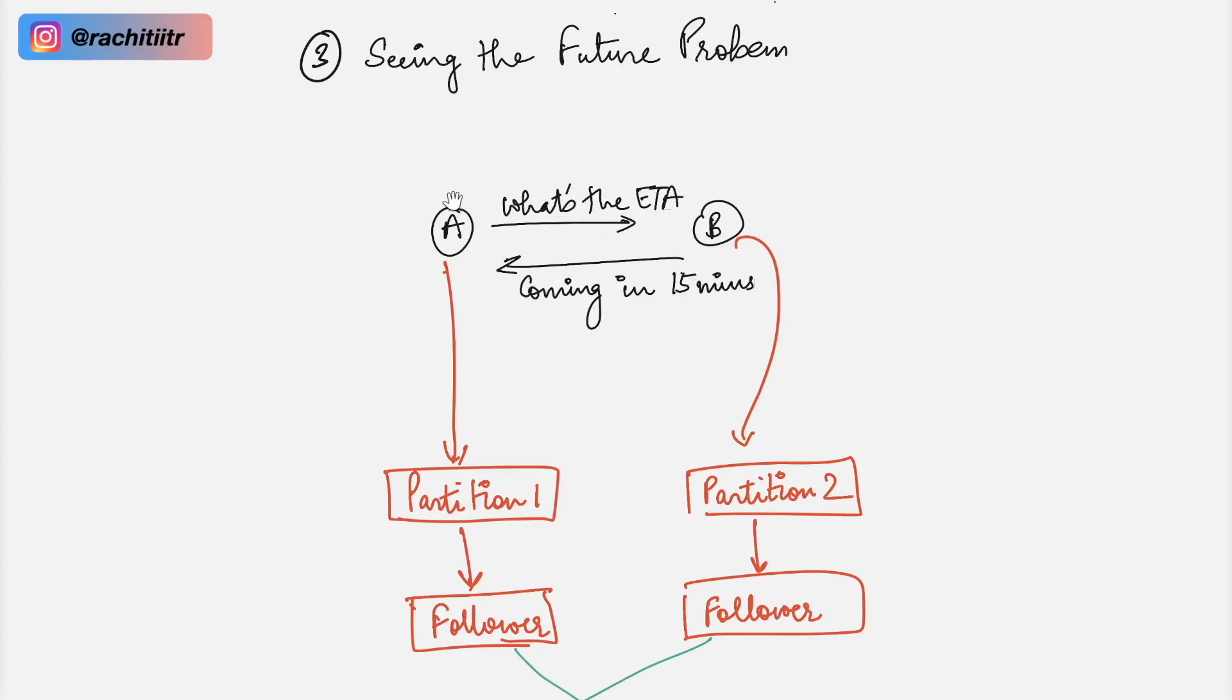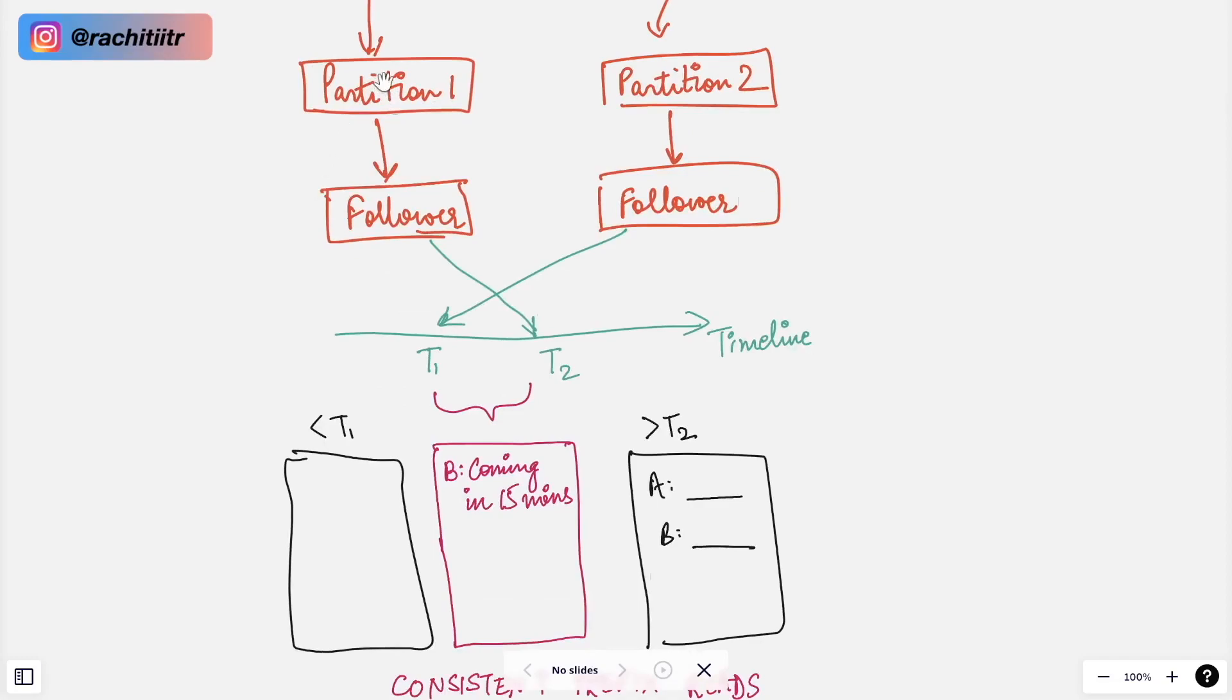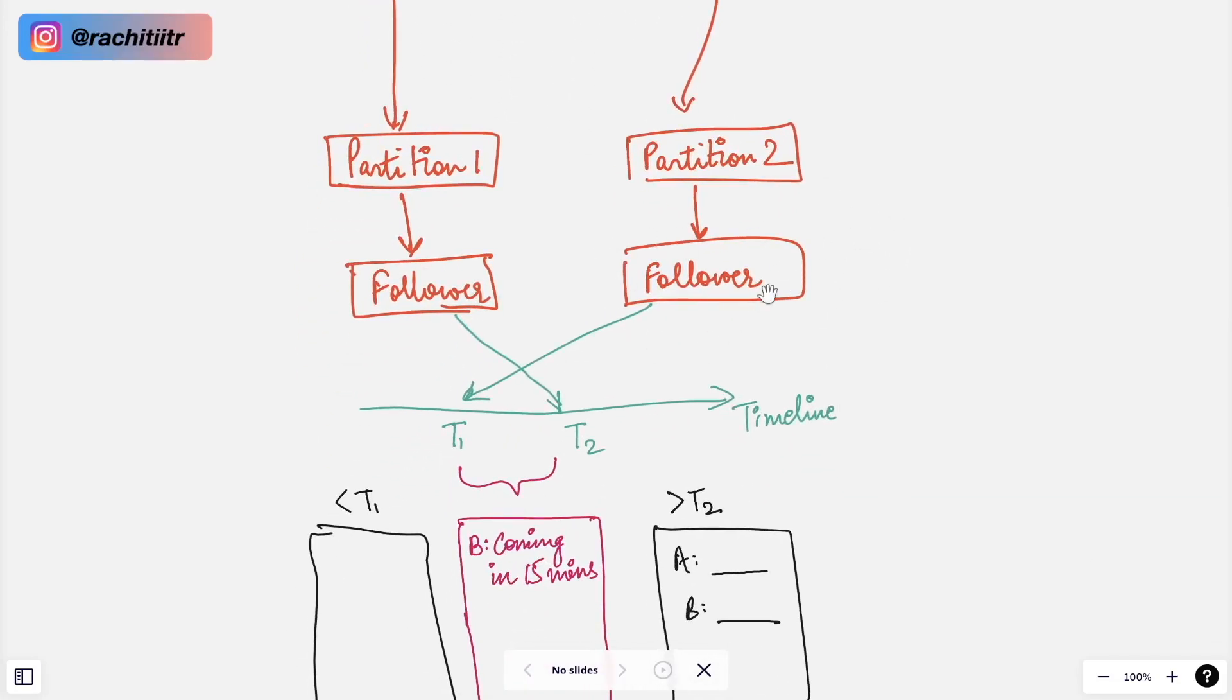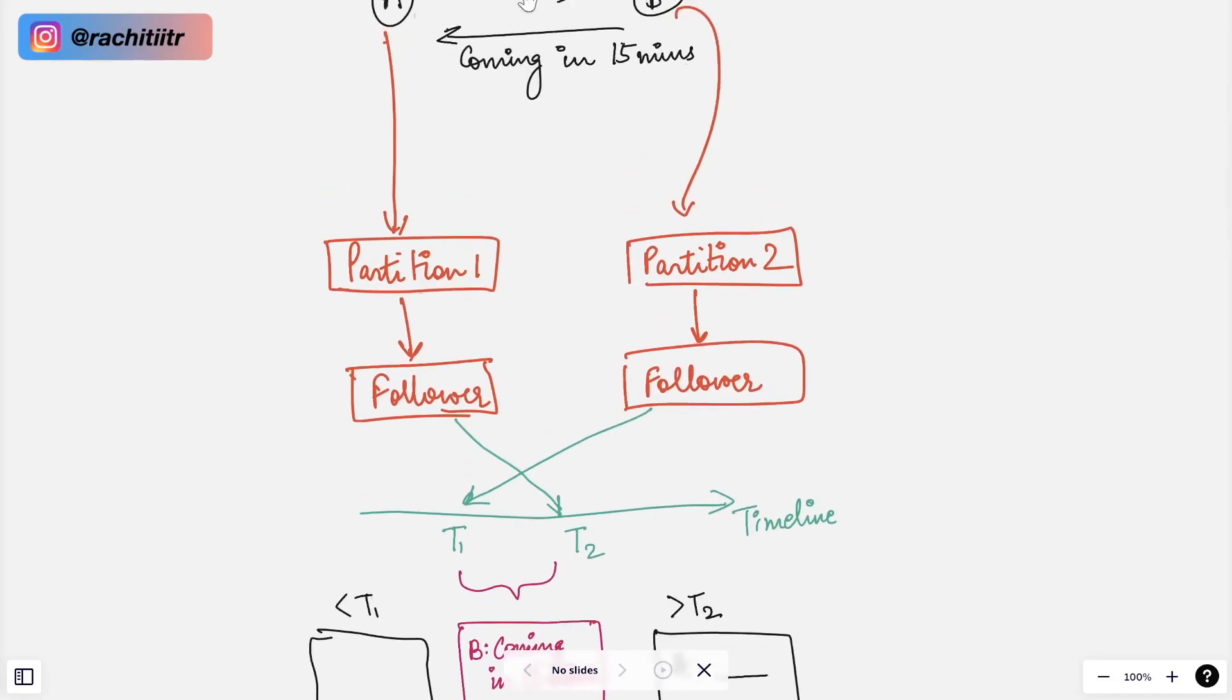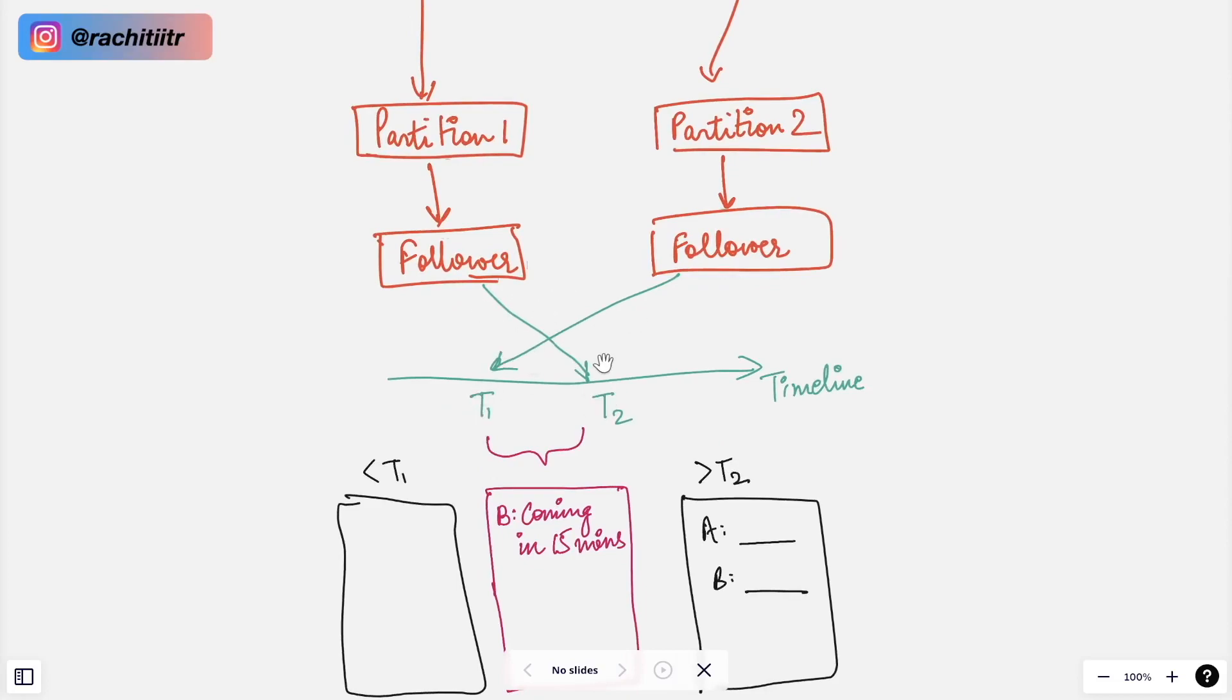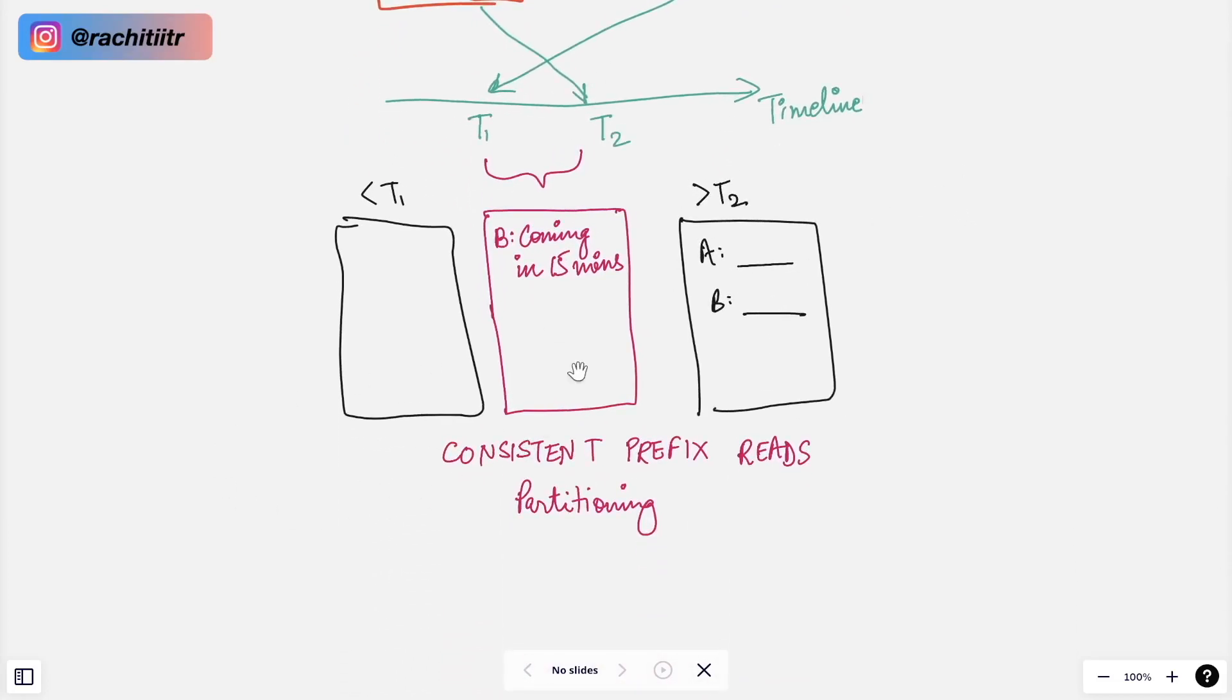So let's say user A is in different geography as compared to user B. Therefore their leader is in partition 1 and the user B's leader is in partition 2. Now since these are two different leaders they will have different followers and there is replication happening between the partition 1 leader with this follower and partition 2 leader with this follower. Now from the user C perspective this is their timeline and it might happen that the user B message which is coming in 15 minutes may get synced to this follower before this what's ETA message gets synced to this follower.